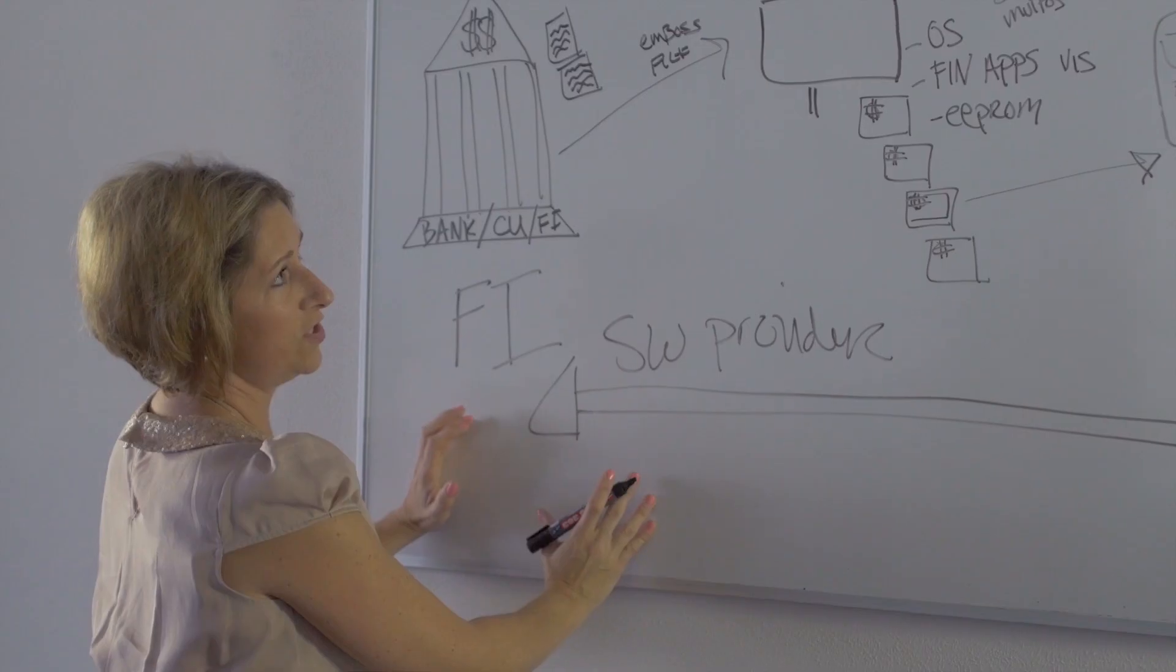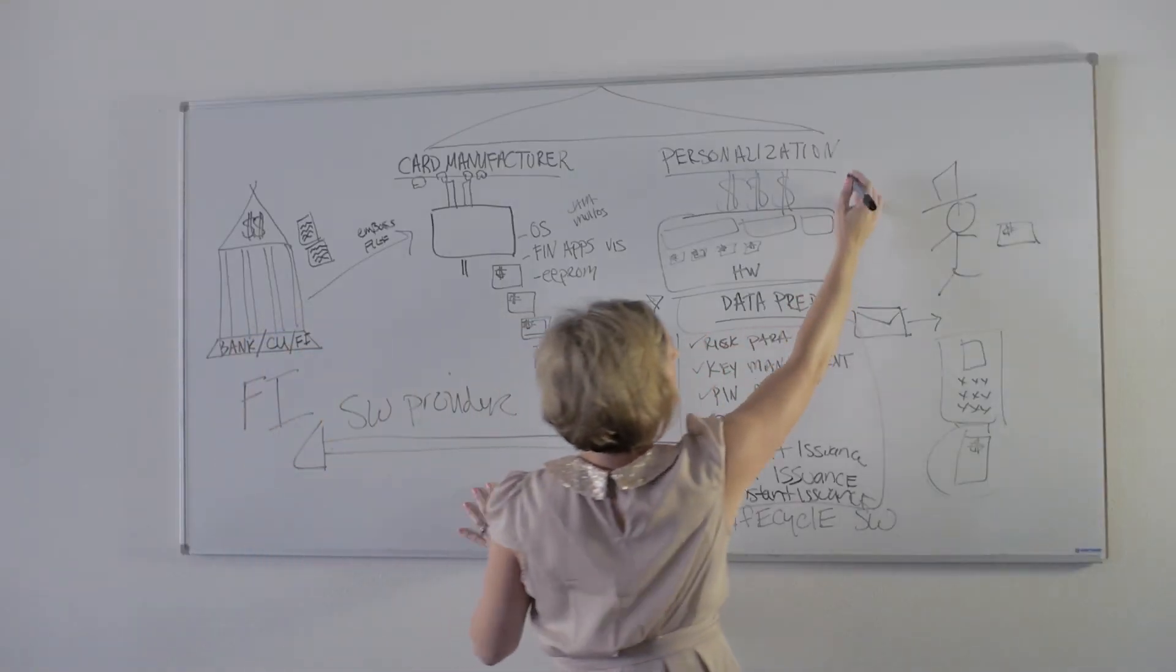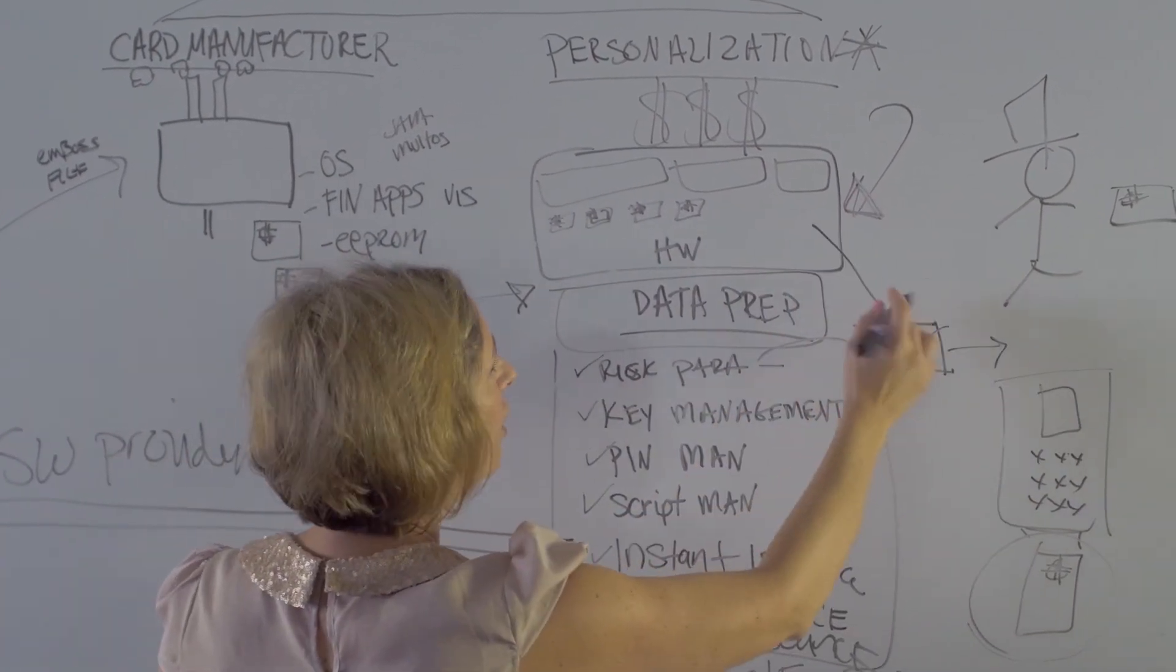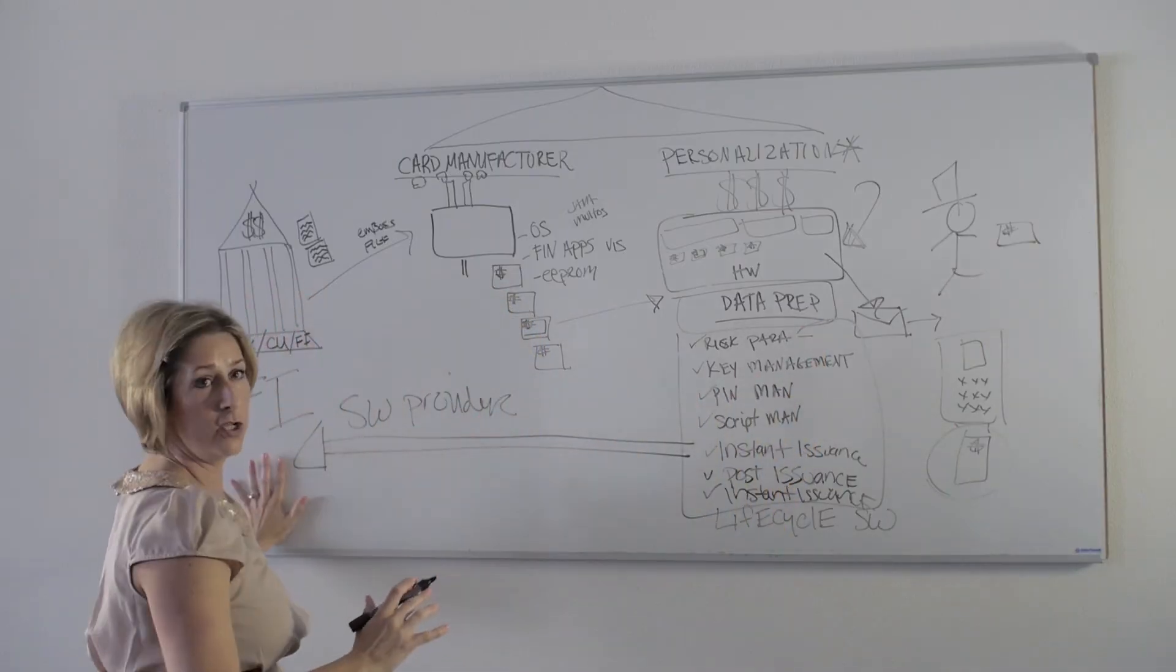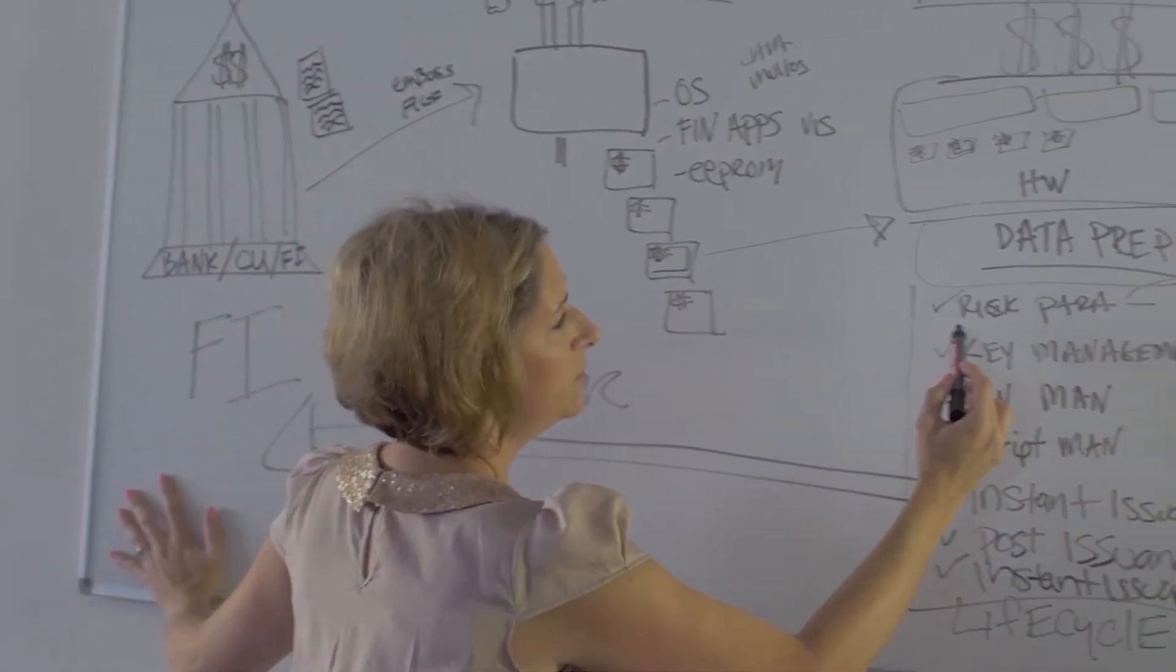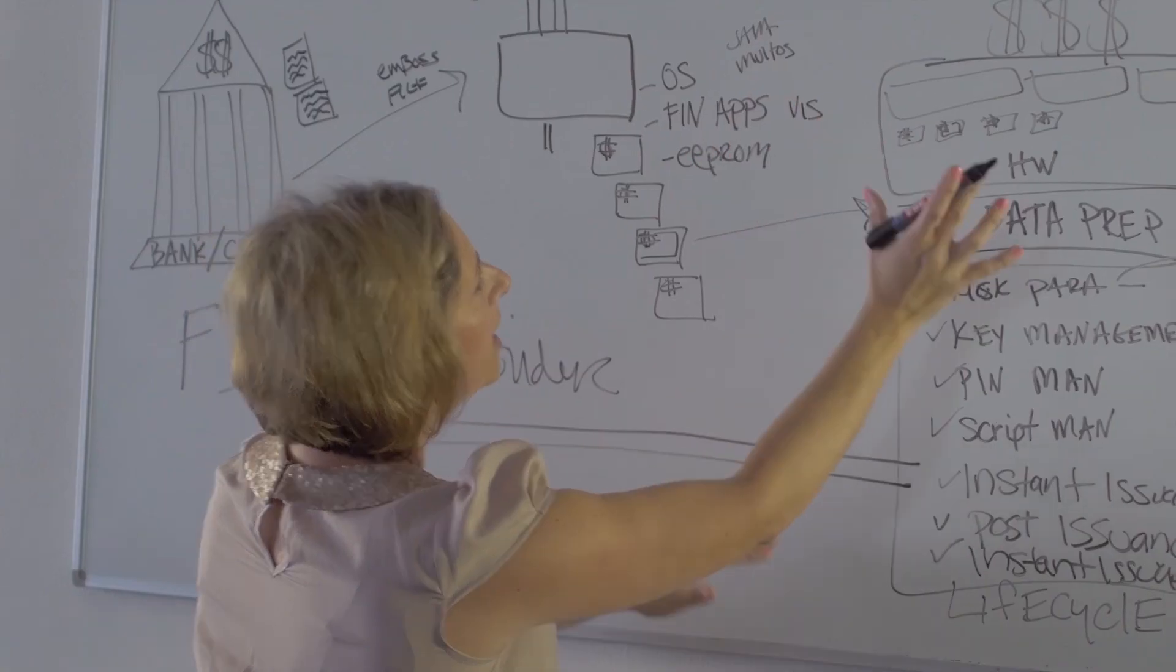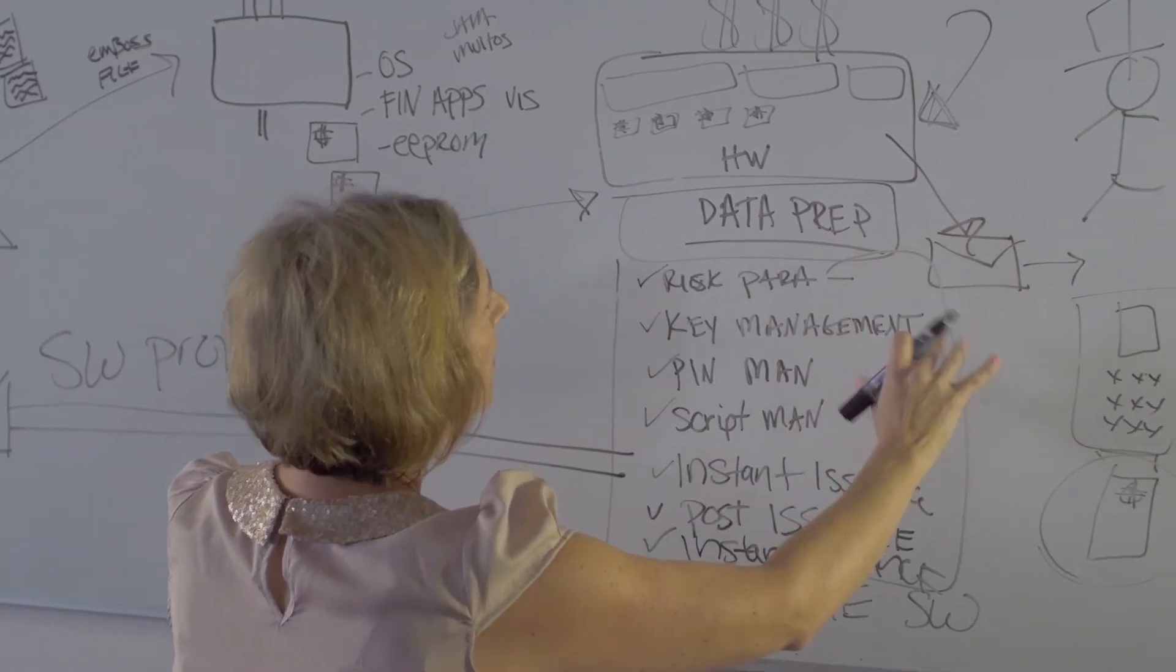Can be done at the issuer site. At the end of the day, you still can keep your same partners being that personalization bureau that does the physical personalization, the embossing, and the fulfillment of their EMV card. You can still keep that same partner, but you are in charge of your budget, you are in charge of the profiles, the amount of money being spent, sending changes and updates to the cards. And you are still providing that same embossing file with enriched data after the data prep has gone through to your same partners.